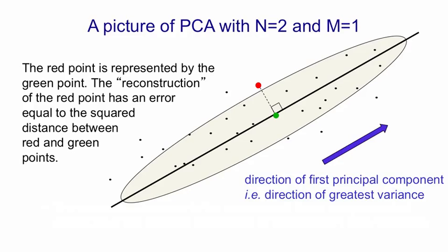When we need to reconstruct the red point, what we'll do is simply use the mean value of all the data points in the direction that we've ignored. In other words, we'll represent a point on that black line.